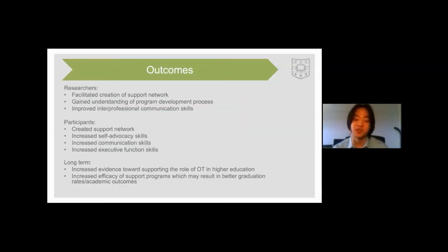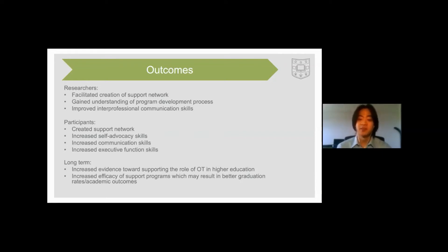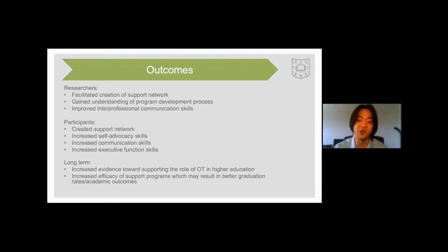Through the development and implementation of Project REACH at WashU, there were notable outcomes for both researchers and student participants. The researchers facilitated the creation of a support network by connecting participants to other neurodiverse students and gained an understanding of the program development process and improved interprofessional communication skills. The participants created their own support network and showed signs of improvement in their self-perceived self-advocacy, communication, and executive function skills. By developing and implementing Project REACH at WashU, we supported the role of OT in higher education and the efficacy of support programs that could potentially contribute to higher graduation rates and improved academic outcomes.